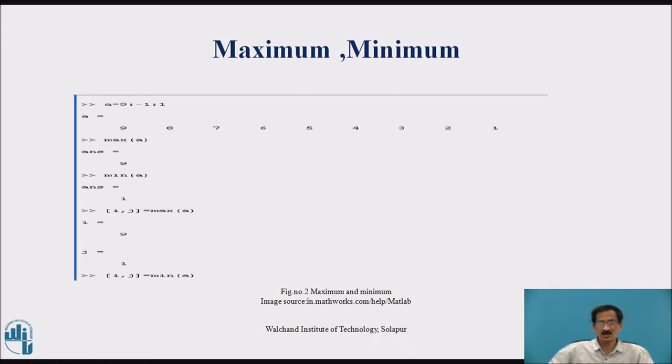Maximum, max of A will give the result as 9. Minimum of A is 1. Then i, j is equal to max A is 9 and 1.